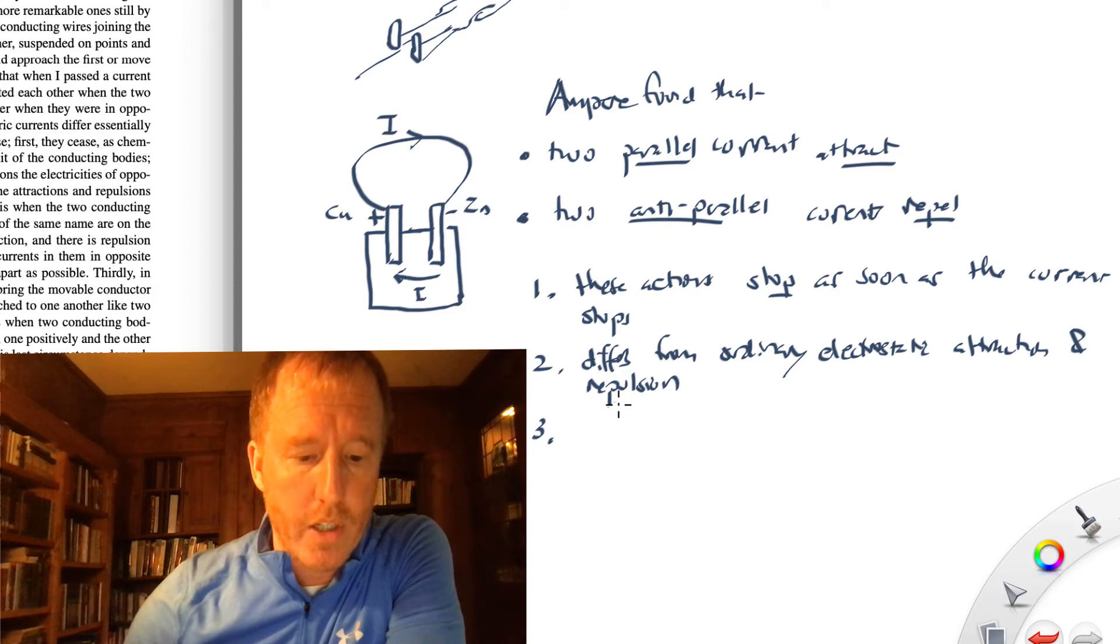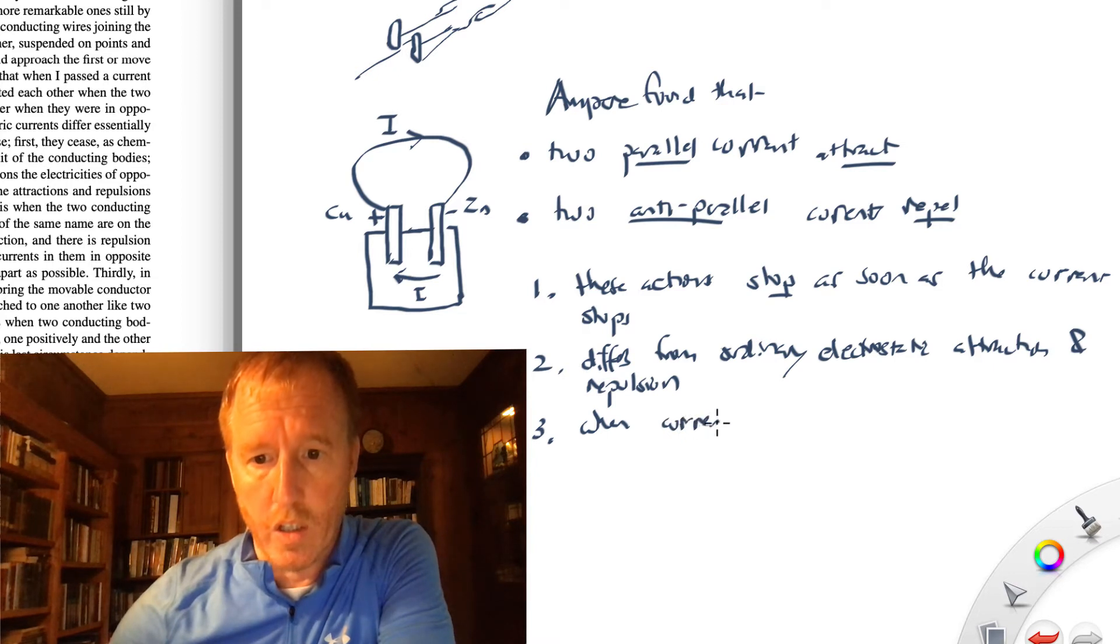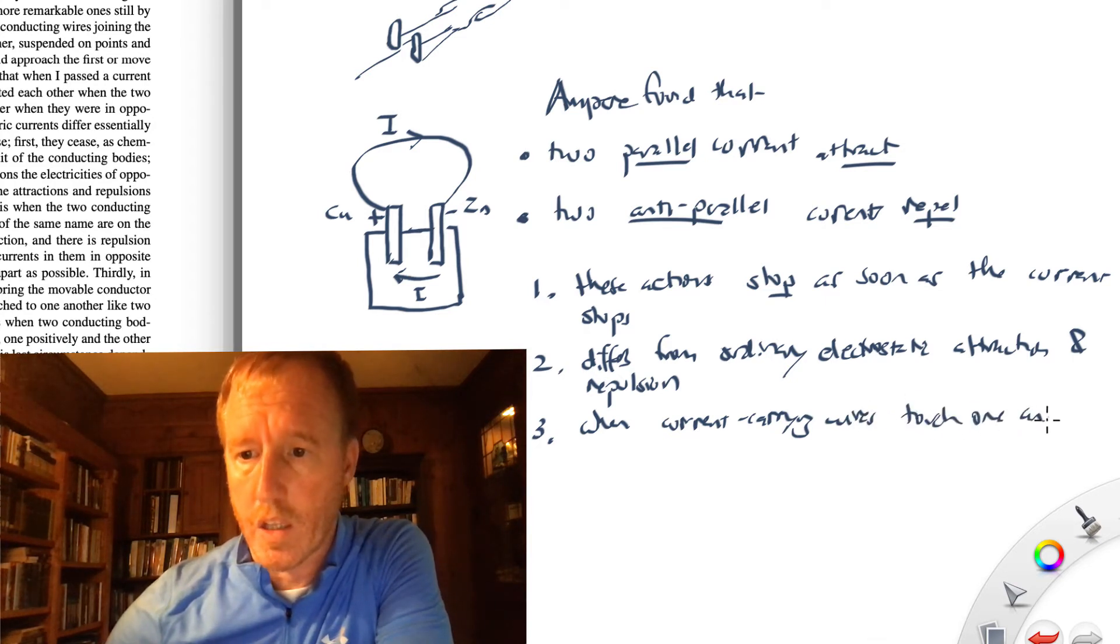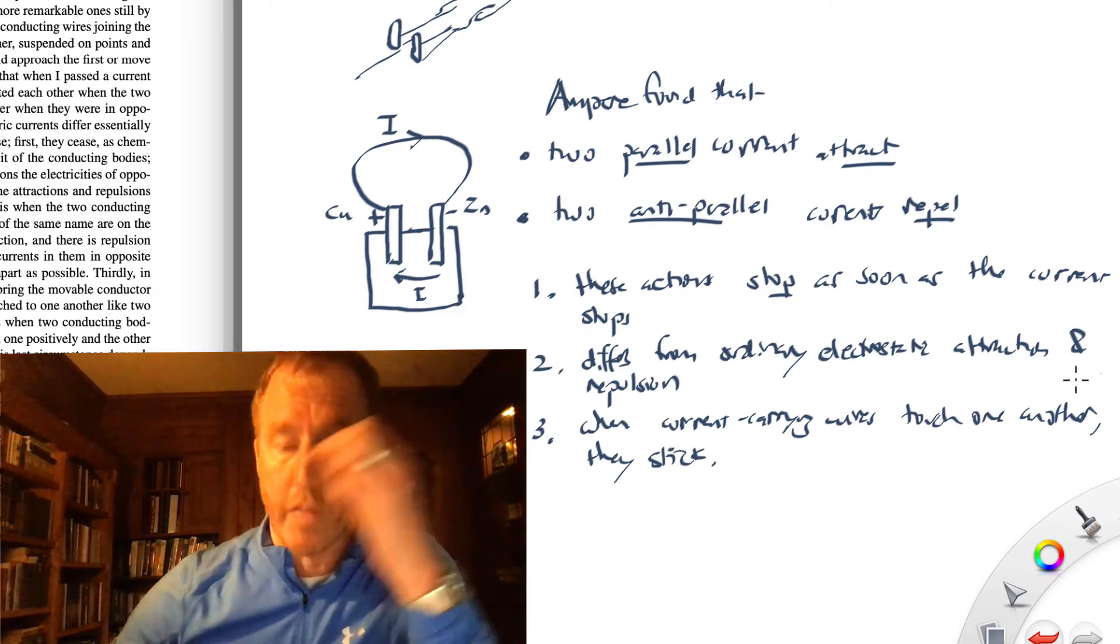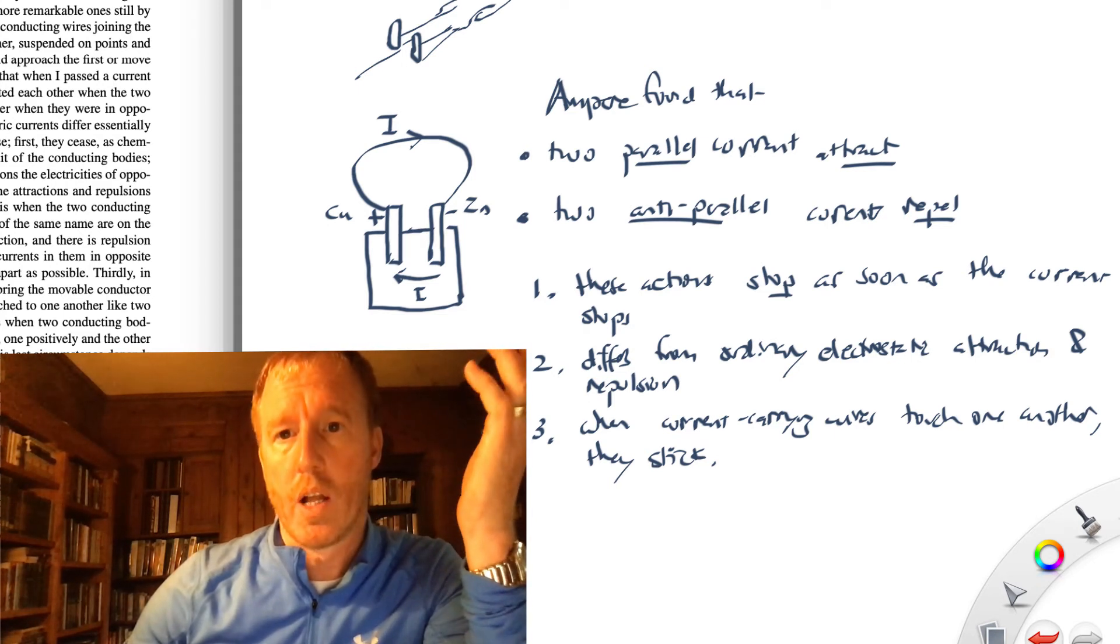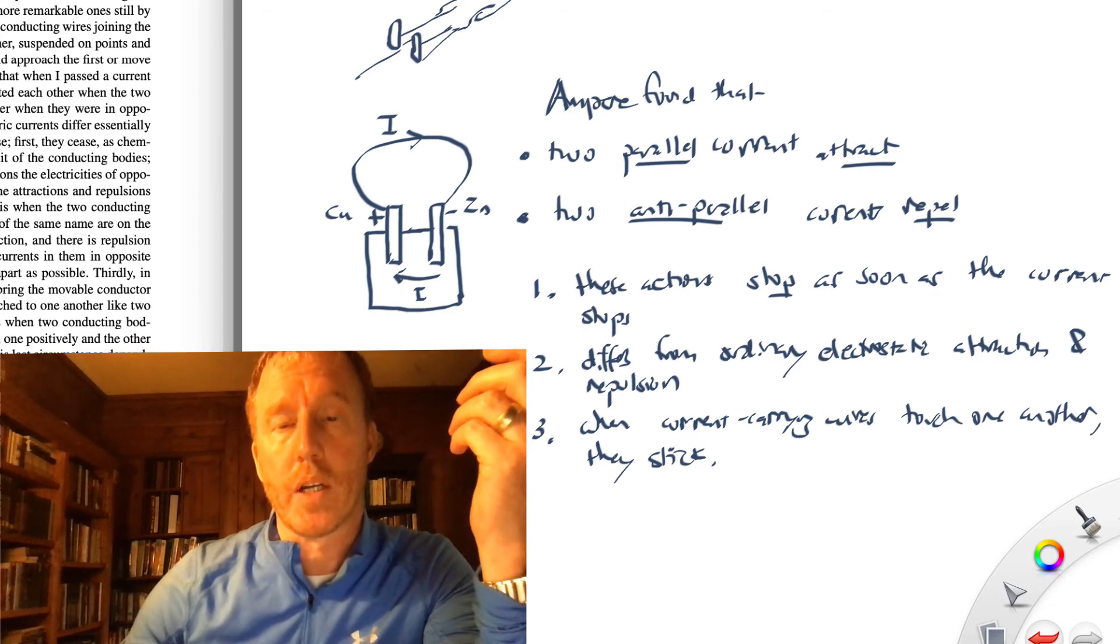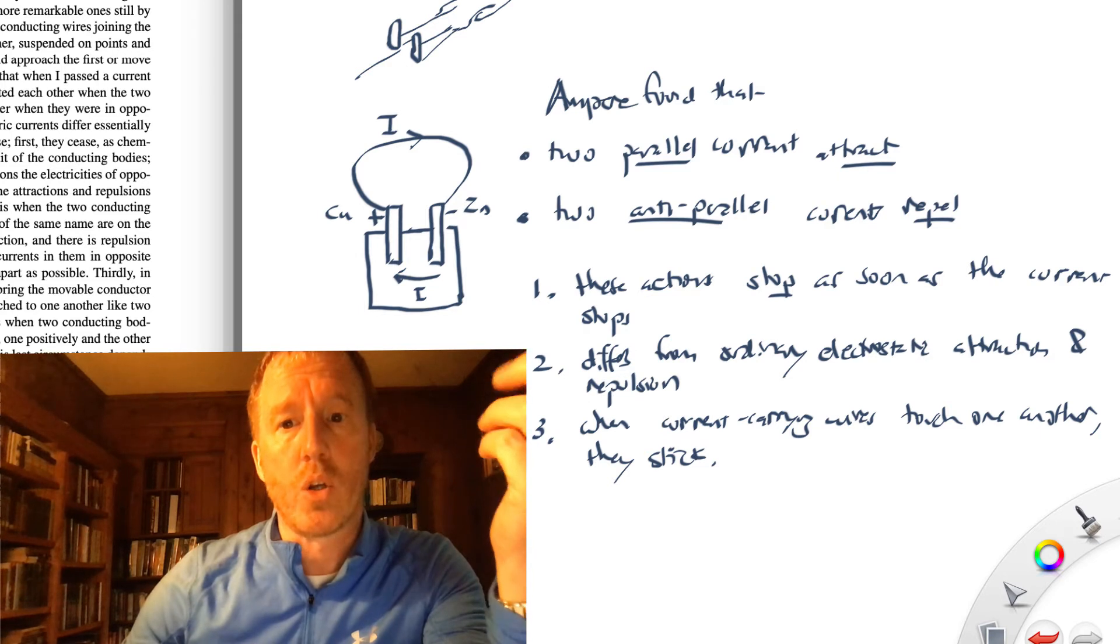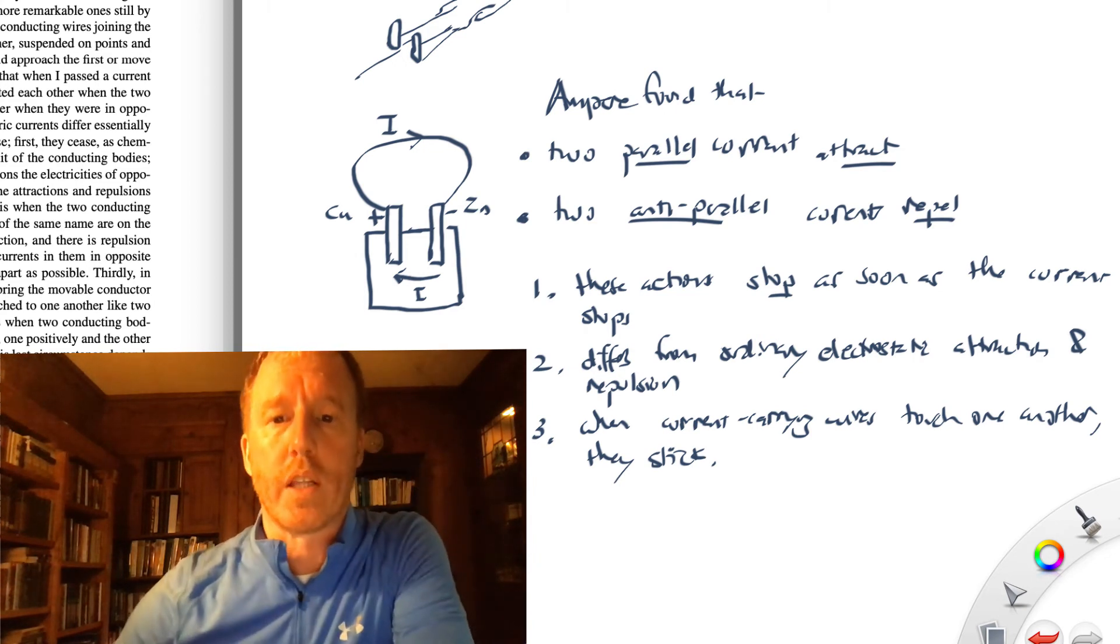Third, he mentions that when the attraction is strong enough so that these wires touch one another, they stick together. When the current carrying wires touch one another, they stick or they stay together. Notice that this also is different than when you have two attracting charged objects. So if you have a positively charged ball and a negatively charged ball, they attract one another. But as soon as they touch one another, the charges come to electrostatic equilibrium. They go to the same voltage, the same electric potential, and then they no longer attract one another because they come to equilibrium. So again, this is, he's highlighting this is different than what people are accustomed to with electrostatic phenomena.